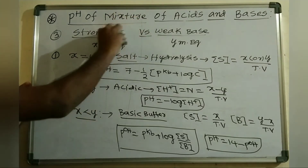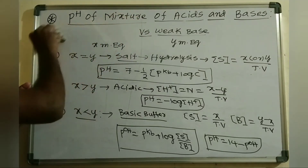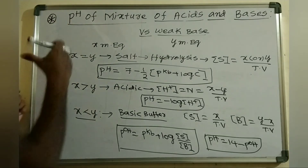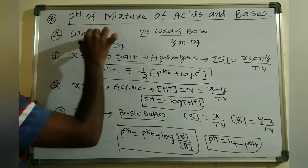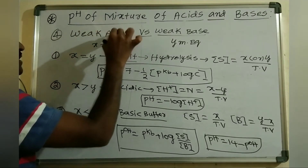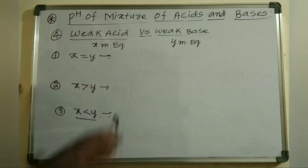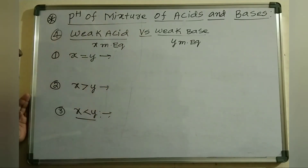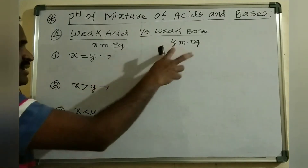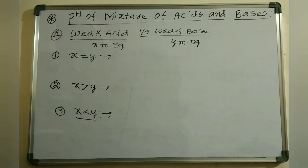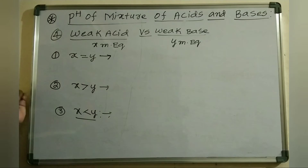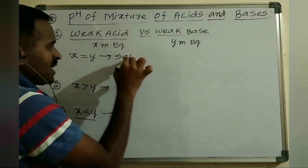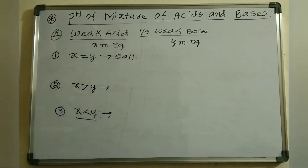The fourth type of titration is weak acid versus weak base. Consider X as the milliequivalents of weak acid and Y as the milliequivalents of weak base. Again, three situations arise. Case 1: X equals Y — milliequivalents of weak acid equals milliequivalents of weak base.